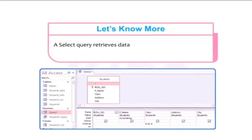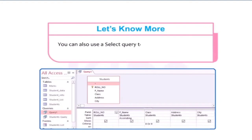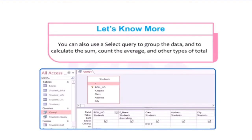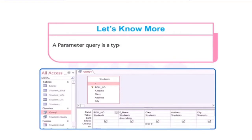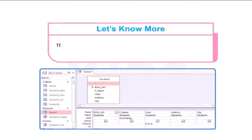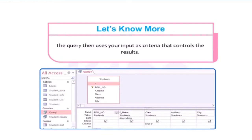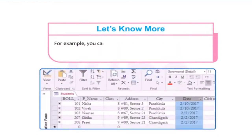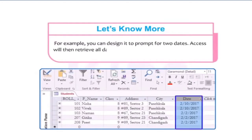A select query retrieves data from one or more tables and displays the record set in a datasheet. You can also use a select query to group data and calculate the sum, count, average, and other totals. A parameter query is a type of select query that prompts you for input before it runs. The query then uses your input as criteria that controls the results. For example, you can design it to prompt for two dates, and Access will retrieve all data with values between those two specified dates.